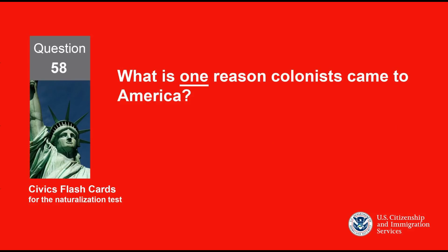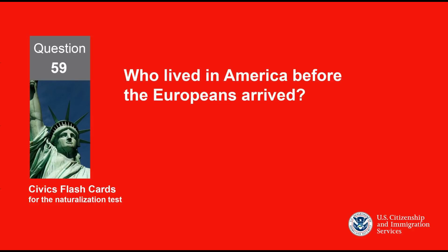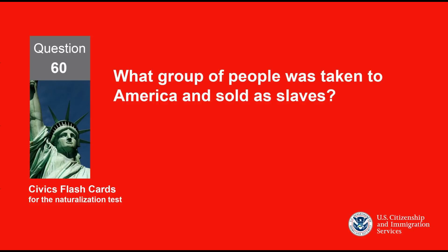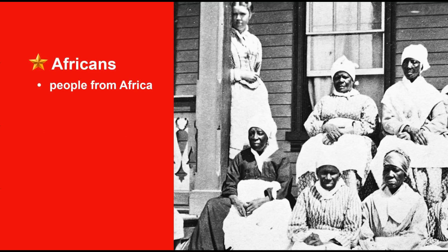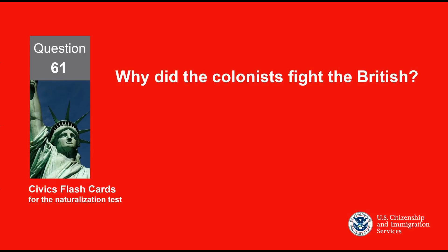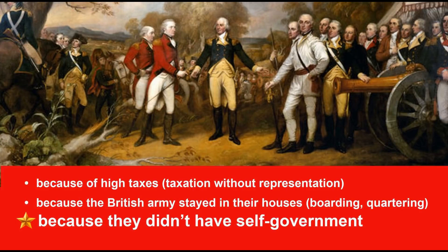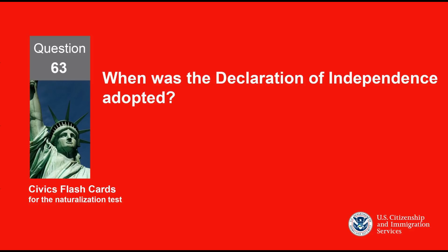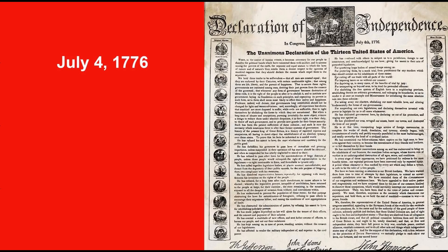What is one reason colonists came to America? Freedom. Who lived in America before the Europeans arrived? American Indians. What group of people was taken to America and sold as slaves? Africans. Why did the colonists fight the British? Because they did not have self-government. Who wrote the Declaration of Independence? Thomas Jefferson. When was the Declaration of Independence adopted? July 4th, 1776.